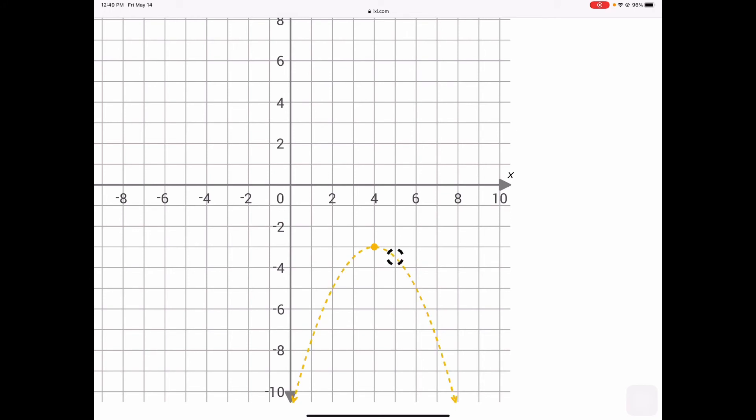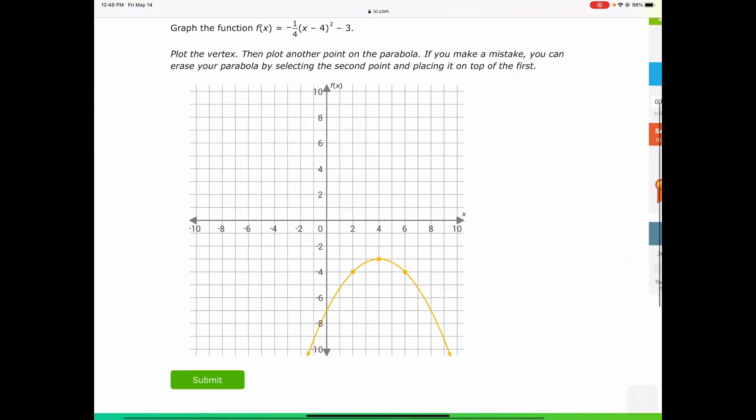So we have to cheat a little bit. And the way we're going to cheat is we're going to say, if I take two steps over, it should have been four steps down. But we multiply that by one-fourth, and that gives us a negative one there. So two steps over is one step down. Let me show you the map.